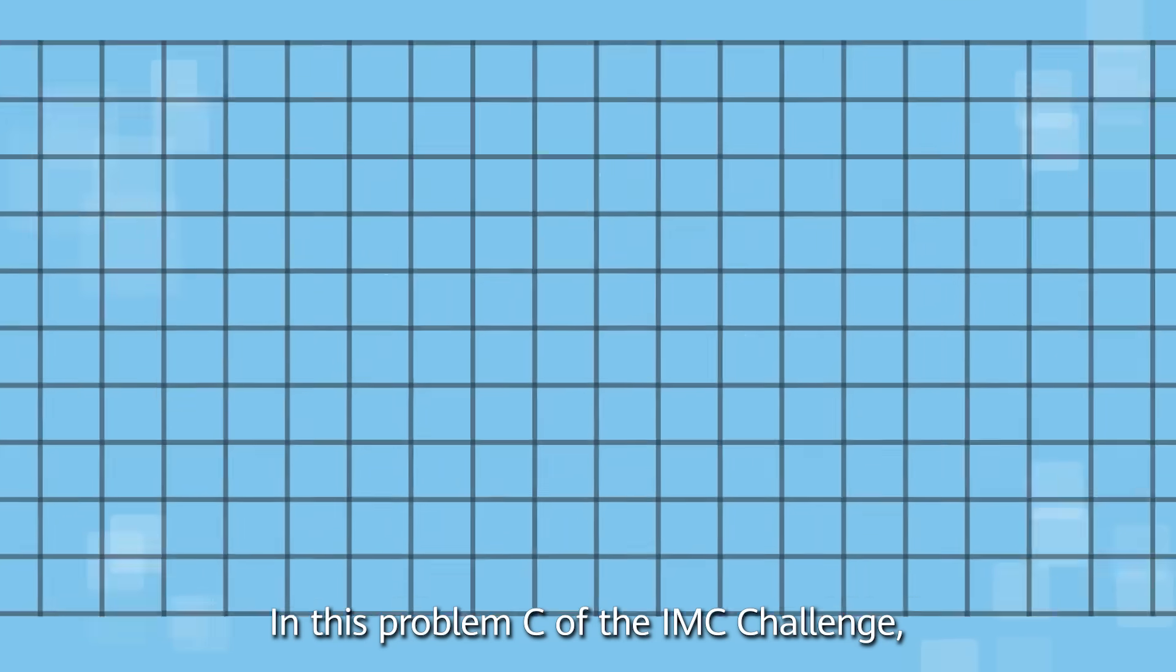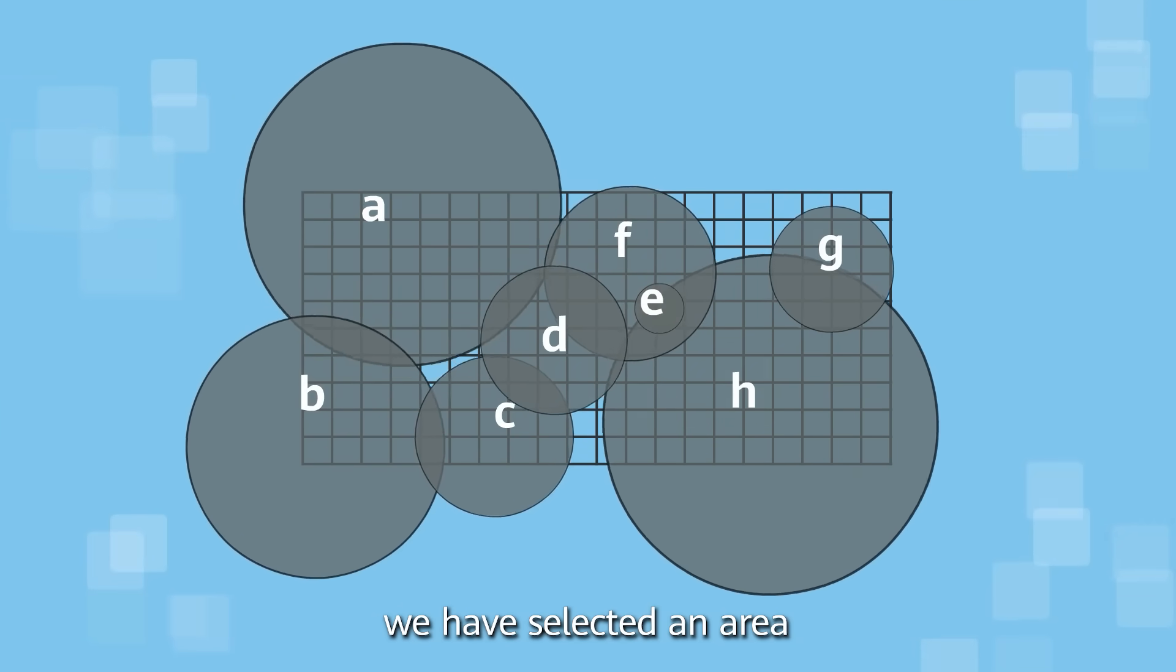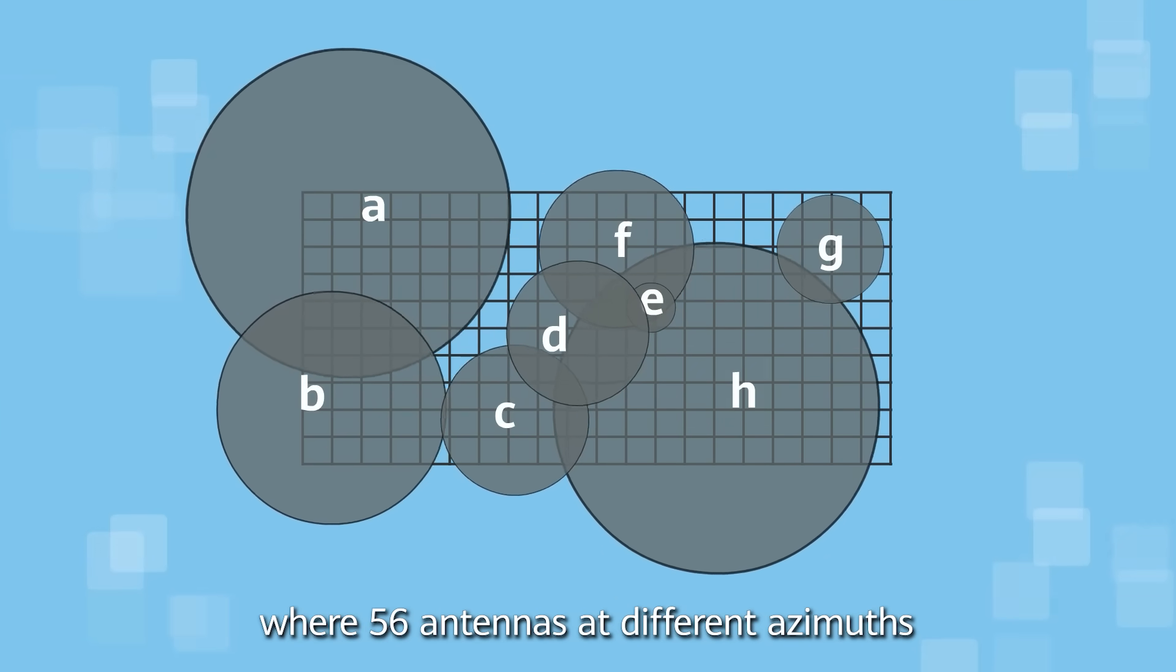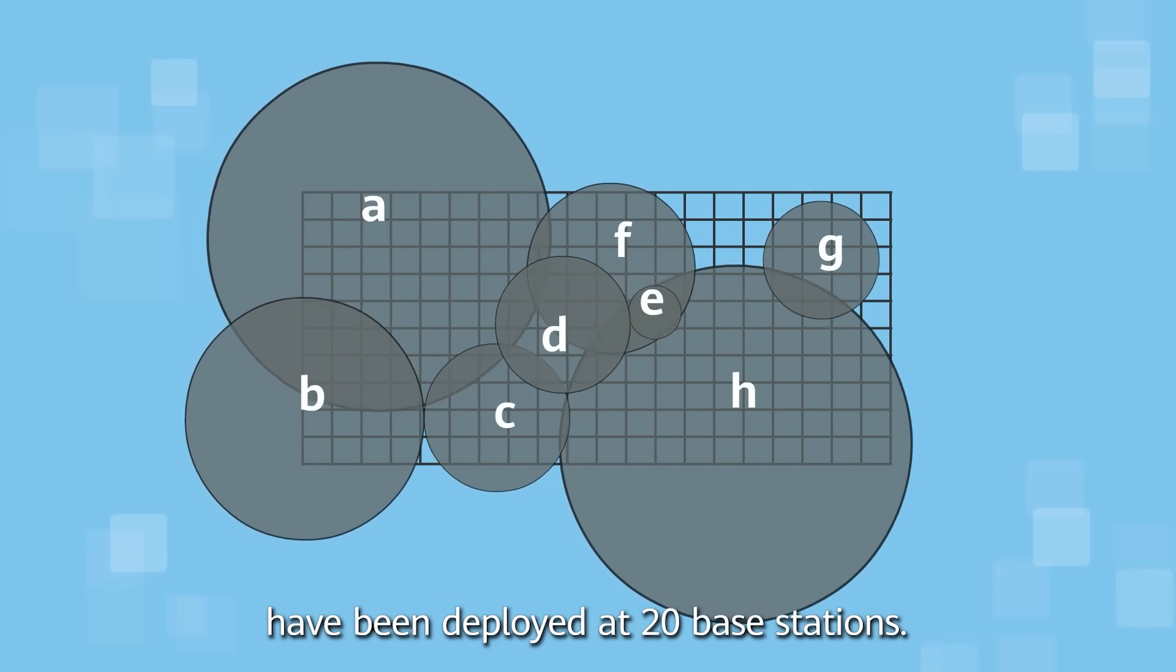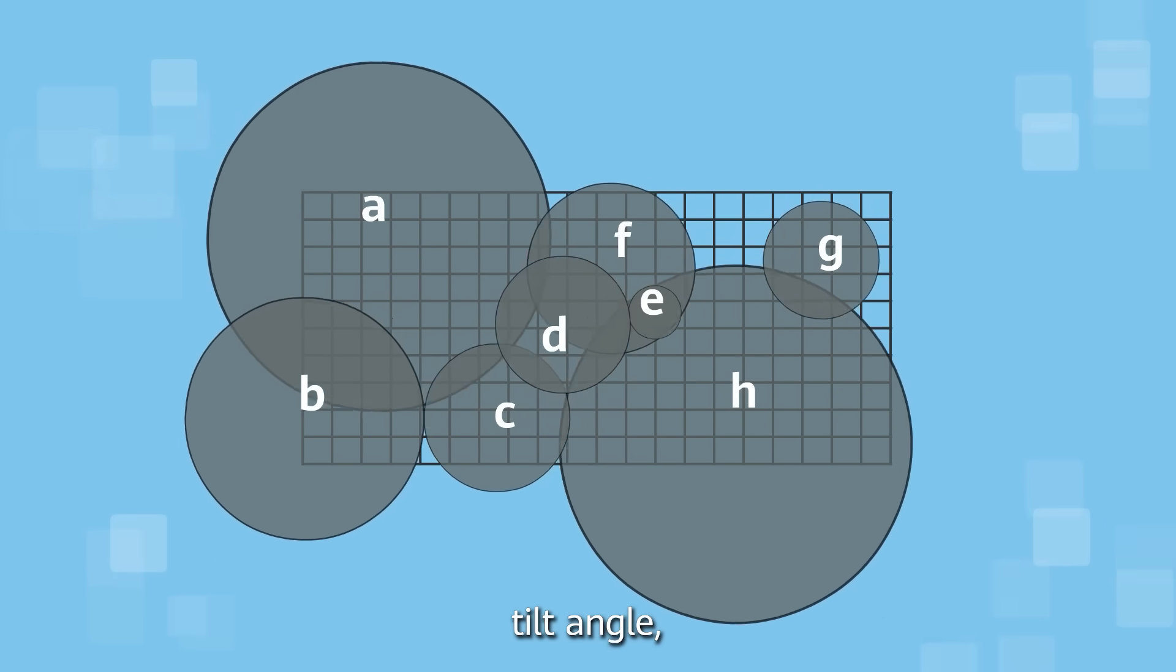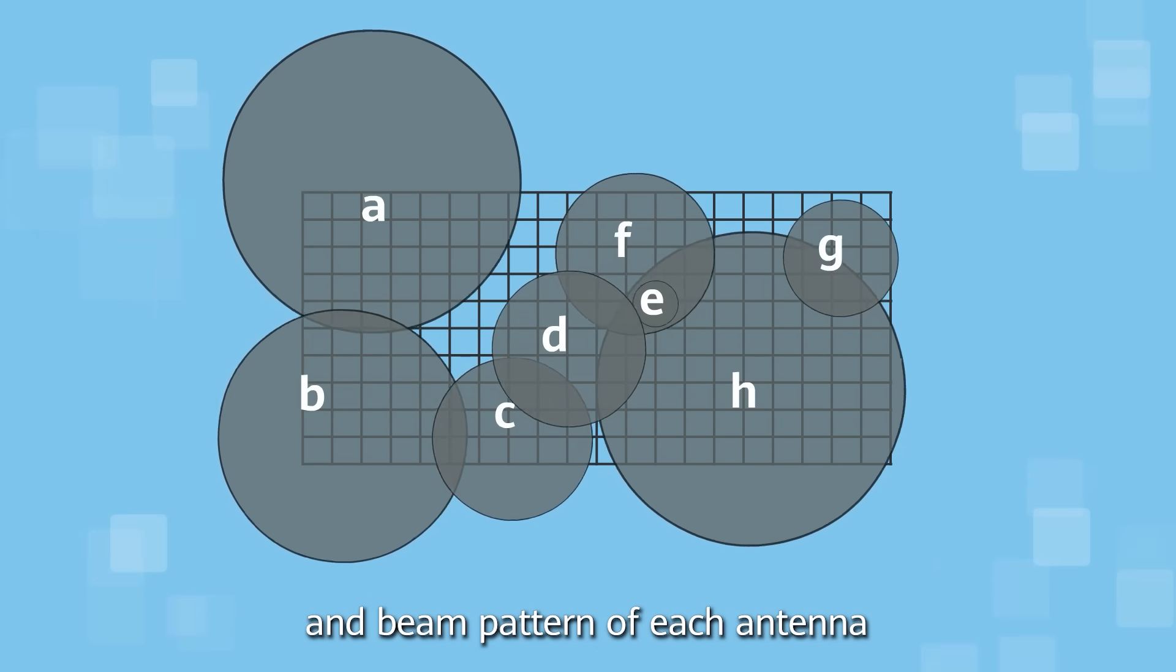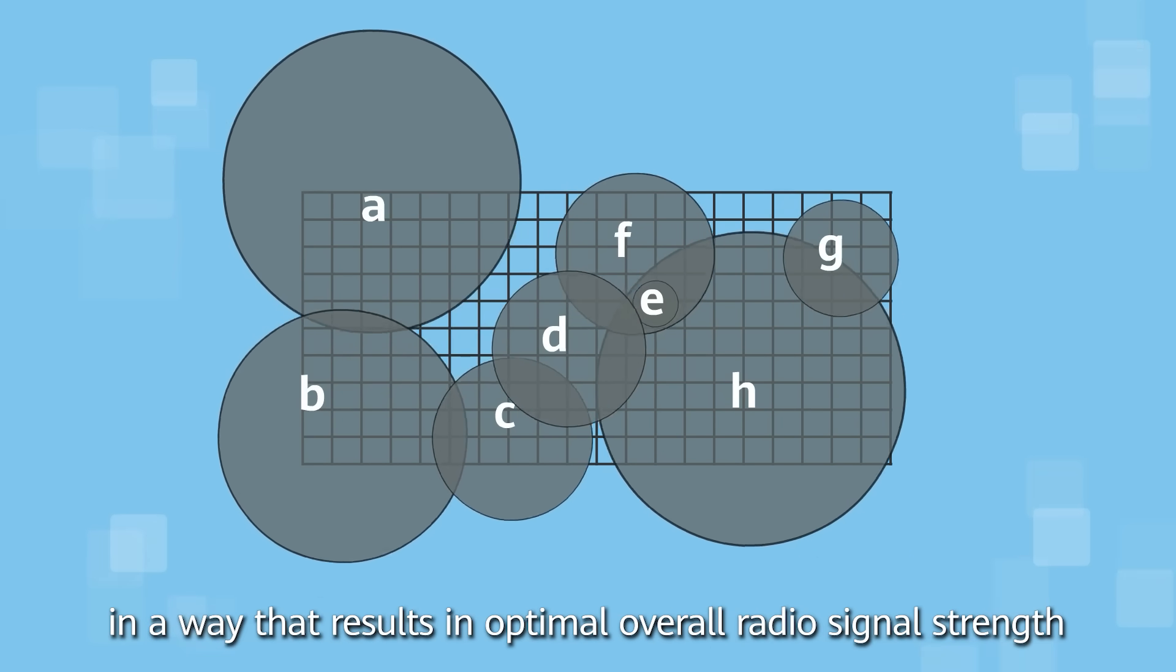In this Problem C of the IMC challenge, we have selected an area where 56 antennas at different azimuths have been deployed at 20 base stations. We expect you to adjust the azimuth, tilt angle, and beam pattern of each antenna in a way that results in optimum radio signal strength and interference suppression effects.